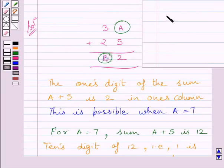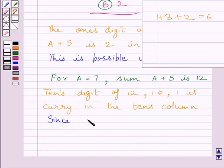Now, adding 3, 2, and carry 1, we get 6. And we know that sum of 3, 2, and carry, that is 1, is equal to B. We can write since 1 plus 3 plus 2 is equal to 6, so B is equal to 6.